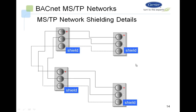Contrary to what was done with the CCN bus — where the shield was grounded at one end and tied back at the other — in the MSTP network, the shield is always connected to the terminal block on the controller.